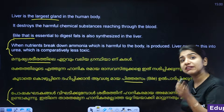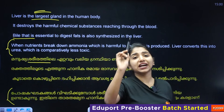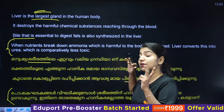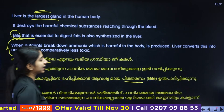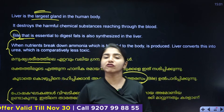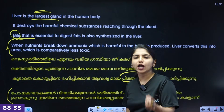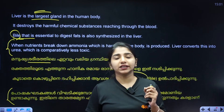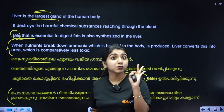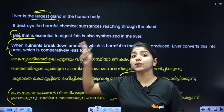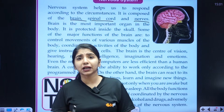The third organ of excretion is the liver. It is the largest gland in the human body. The liver produces bile juice which helps in the digestion of fat. Without bile juice, the body cannot digest fat properly.